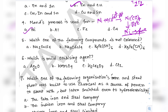Question 5: Which one of the following compounds is not colored? Options are Na2CuCl4, Na2CdCl4, K4Fe(CN)6, and K3Fe(CN)6. Coloration is related to d–d electronic transitions. We consider whether the electronic configuration of the central atom is d0 or d10 — if so, it will be colorless; if d1 to d9, it will be colored.